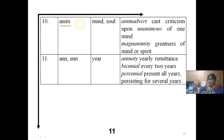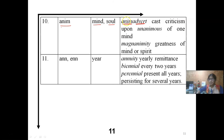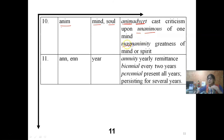ANIM means 'mind' or 'soul.' ANIMADVERT — ADVERT means opposite, ANIM means soul — going against, criticizing someone's soul or actions. This word is deeply used in the context of criticism. UNANIMOUS — UNAN means one, ANIM means soul — of one mind, two roots combined: prefix plus root. MAGNANIMITY — MAGNA means large/great, ANIM means soul — greatness of mind or spirit.